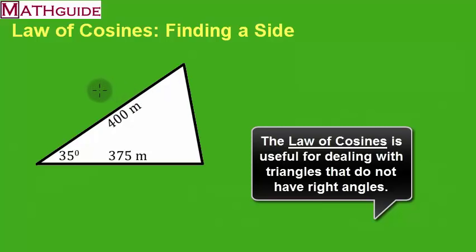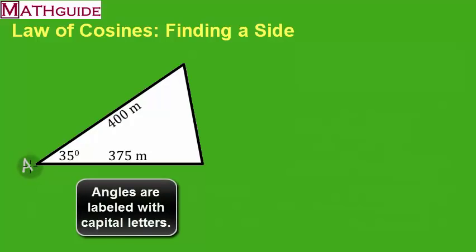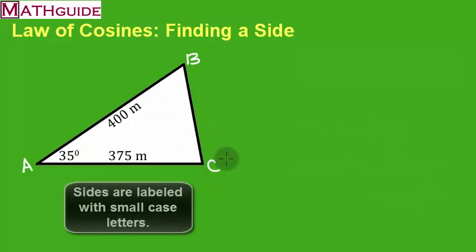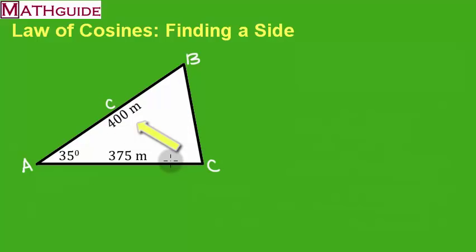Here's something you need to know about the law of cosines: the formula we use has the letters A, B, and C in it. The formula is based off of first the angles. So I'm going to label these angles — I'm going to call this angle A, this angle B, and this angle C. Big C is the angle, little c is the side.